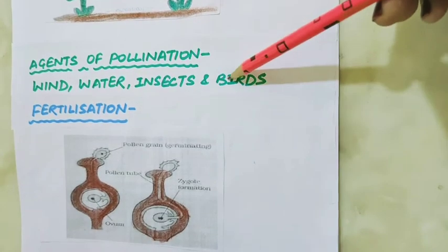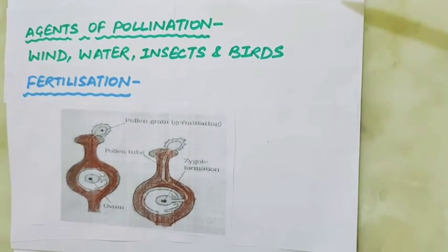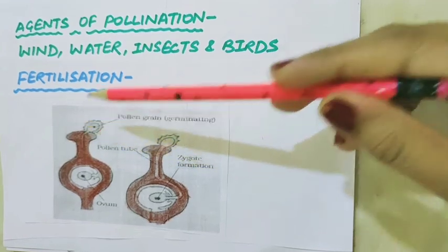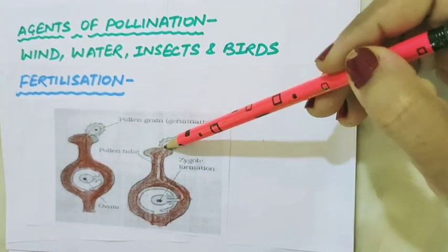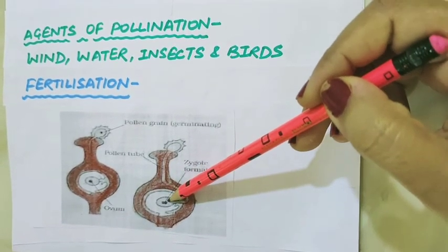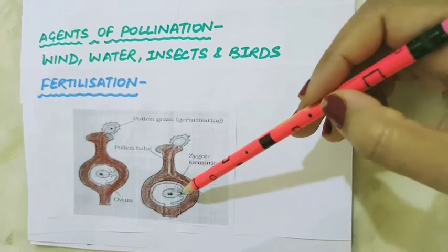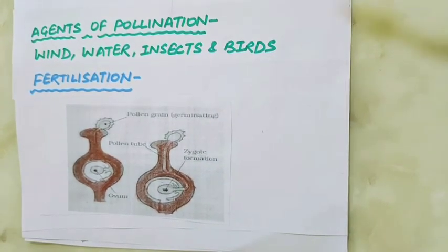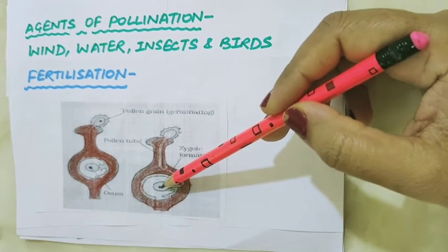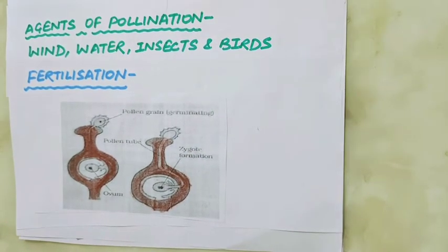The process in which the male gamete fuses with the female gamete to form a zygote is called fertilization. When pollen is deposited on the stigma, it begins to germinate. A long pollen tube develops from the pollen grain, passing through the style toward the female gamete in the ovary. The male gamete moves down the pollen tube, which enters the ovule inside the ovary. The tip of the pollen tube bursts and the male gamete comes out. Inside the ovary, the male gamete fuses with the female gamete in the ovule to form a fertilized egg cell — the zygote. The zygote develops into an embryo, which is the part of the seed that develops into a new plant.